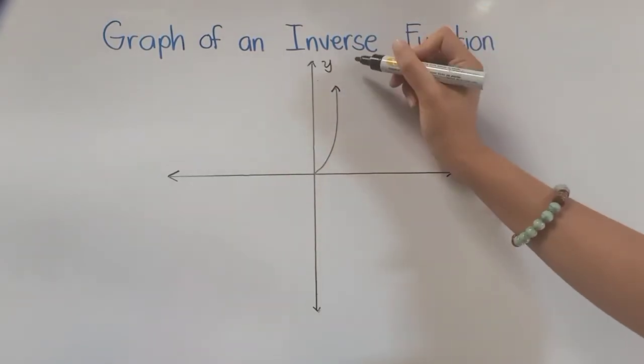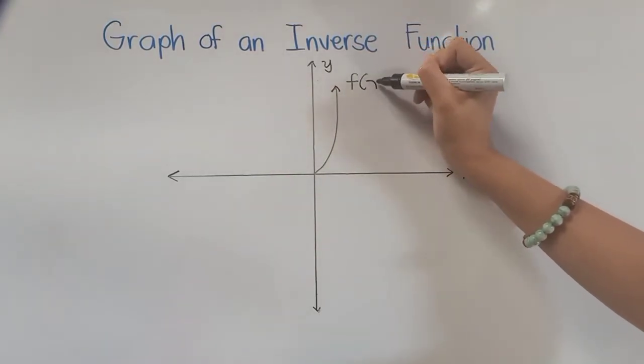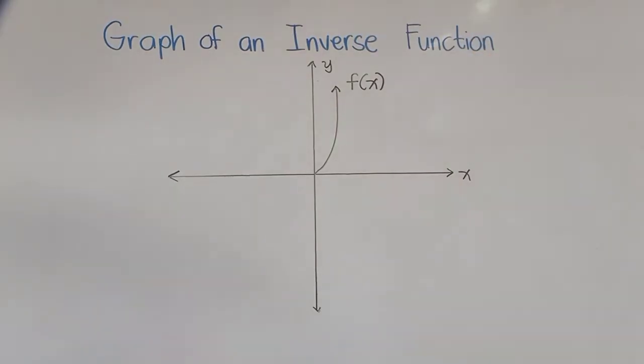Assuming that this is the graph of our function f, the first thing that we have to do to get our inverse function or the graph of its inverse, we have to place first our reflection line x is equal to y.